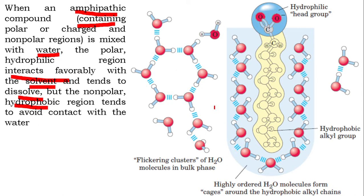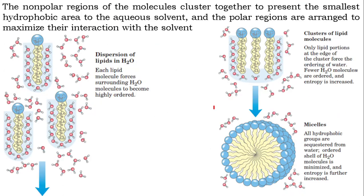The hydrophobic regions tend to interact with each other and avoid water — they come together. This is how hydrophobic interactions arise. From hydrogen bonds, we move into hydrophobic interactions. These amphipathic lipids may form micelles. In the digestion and absorption of lipids, upon digestion, these lipids form a micelle.